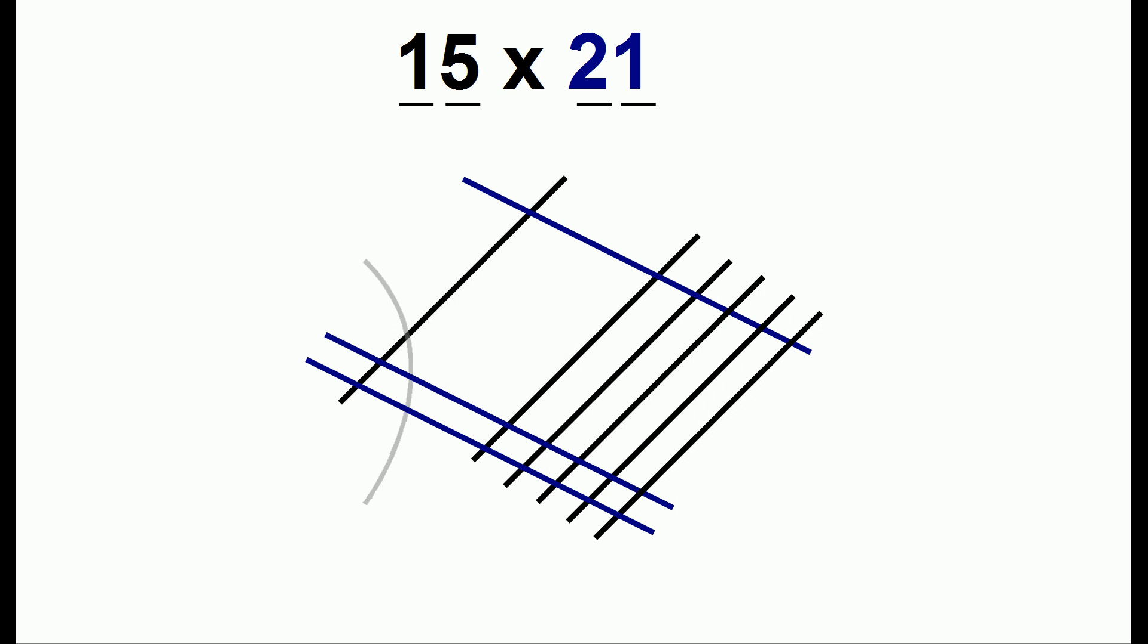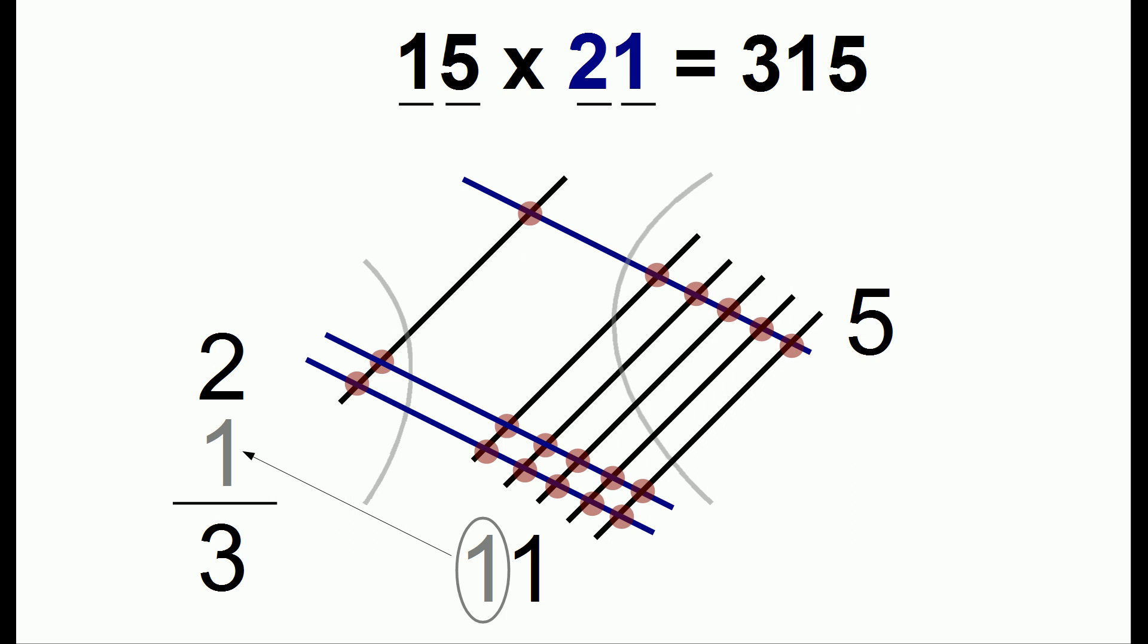We will again group the different lines. Here we have five dots. In the middle, we have 11 dots. And the other end, we have two dots. We'll need to make one adjustment. Because we have 11, we'll need to carry this one over, which will make three. And our answer is 315.